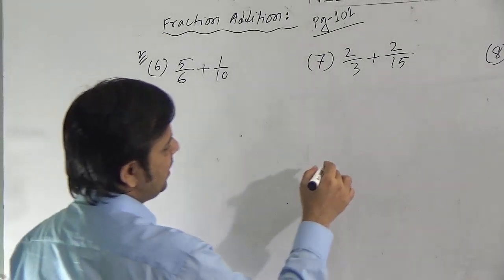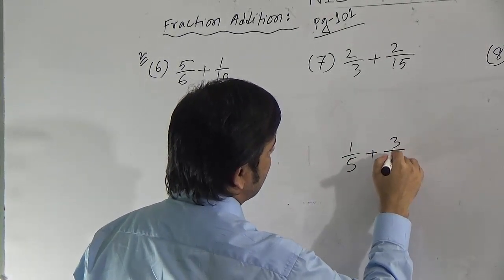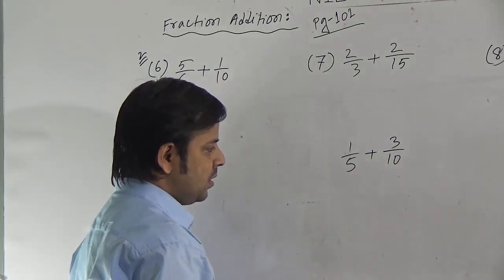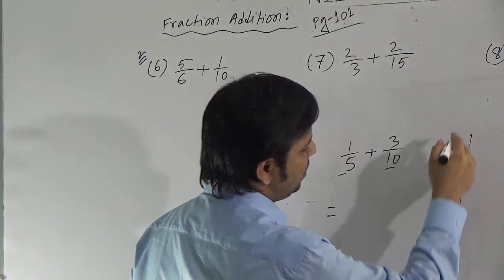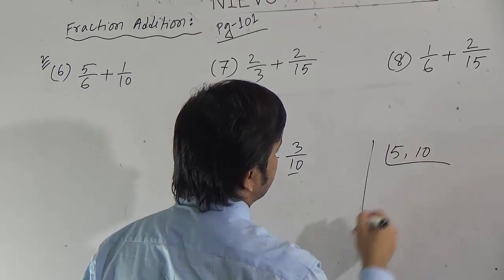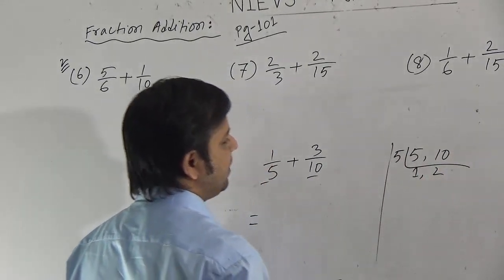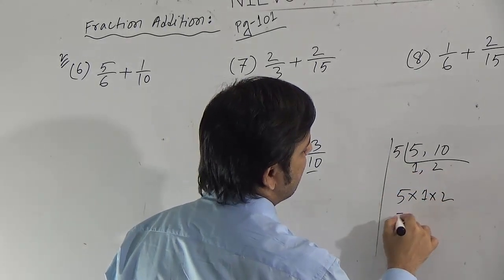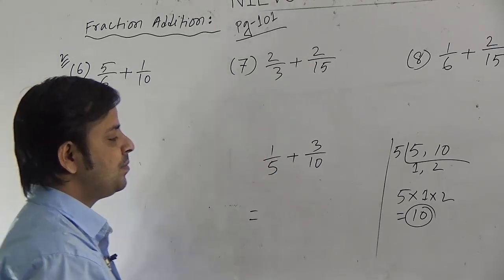First one: suppose I am writing the fraction 1/5 plus another fraction 3/10. To do addition, at first we have to find the LCM of the denominators. Here the denominators are 5 and 10. So find the LCM of 5 and 10. You can do the LCM by the short method. Take 5 here; if you divide 5 by 5 you get 1, and 10 by 5 you get 2. So the LCM is the product of 5, 1, and 2, which is 10.